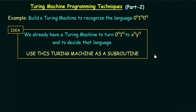Coming back to the example we were discussing — we want to design the language of the form 0^n 1^n 0^n. We already have a Turing machine that turns 0^n 1^n to x^n y^n. Now what we will do is use this Turing machine as a subroutine — we will modify it in some way and combine two or more of these Turing machines in order to perform this task.